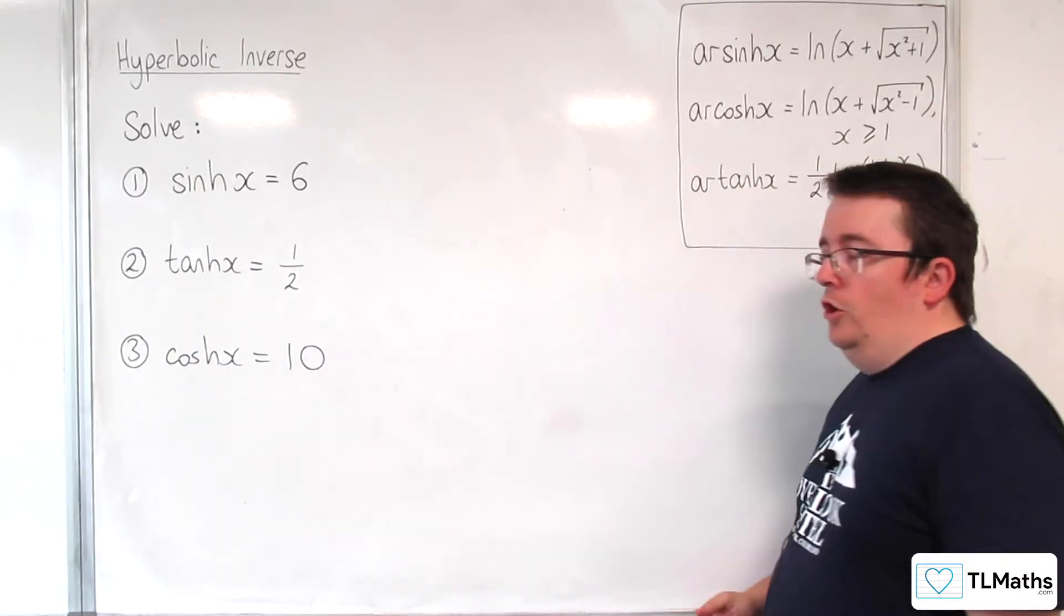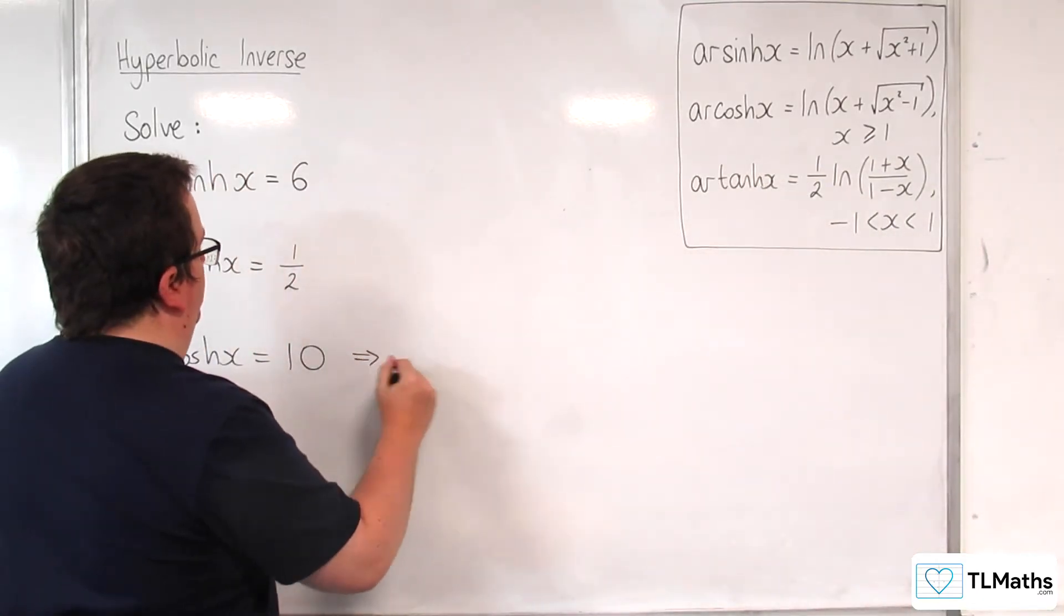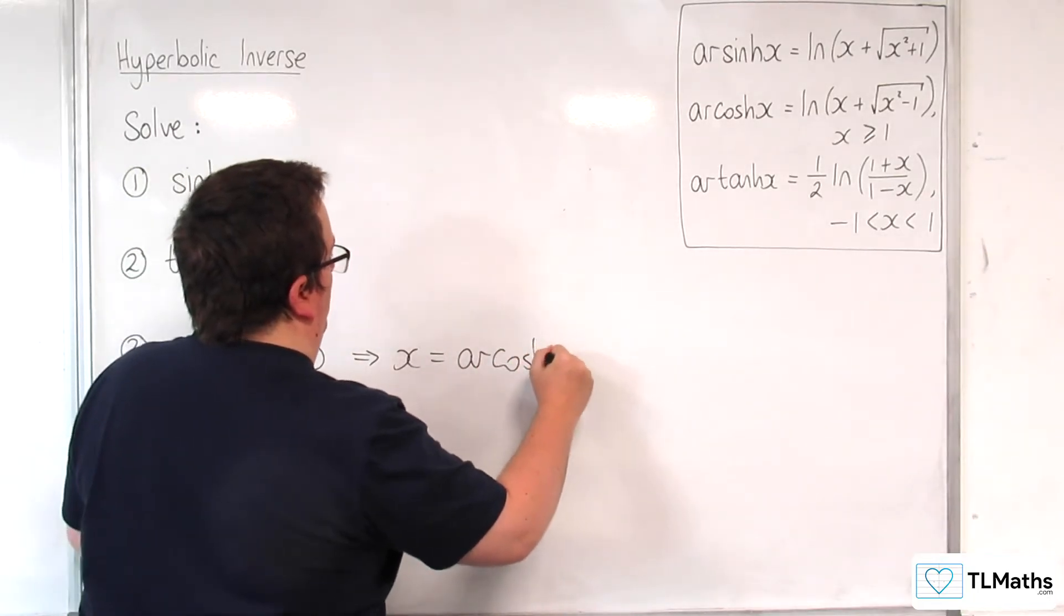Number 3. Cosh x equals 10. So that means that x is going to be equal to arcosh of 10.